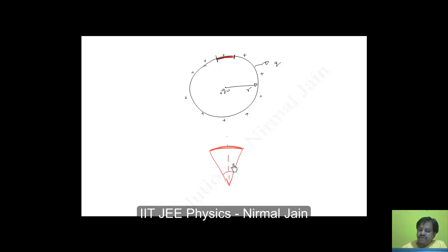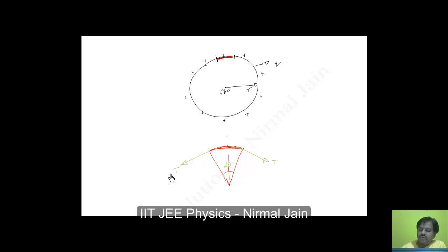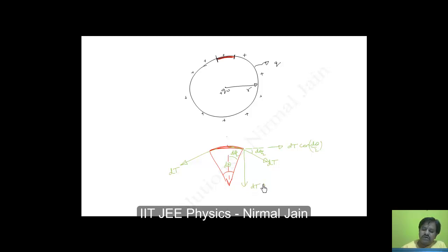There will be an increment of tension, with a tension force acting in this direction as well as in this direction. Let that incremental tension be dT. This angle will be dθ/2, and this angle will also be dθ/2. We will have dT·cos(dθ/2) in this direction, and similarly dT·sin(dθ/2) on the other side.